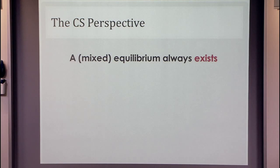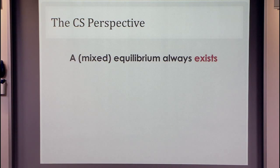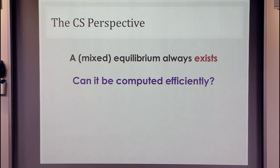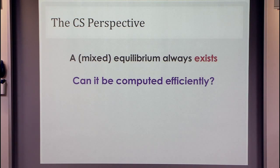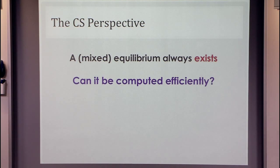As game theorists, we may be completely satisfied with knowing that a Nash equilibrium exists. But as computer scientists, just knowing that something exists is usually not enough. We also want to know whether a Nash equilibrium of a game can be computed efficiently. Today, we don't have any polynomial time algorithm for computing a Nash equilibrium. As far as we know, this problem may be intractable.